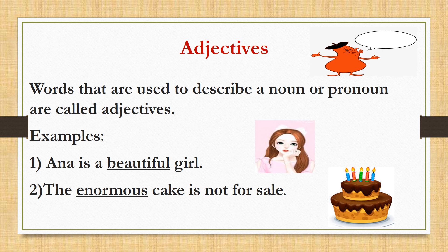So let's read the definition first. Words that are used to describe a noun or pronoun are called adjectives. We can also say that adjectives tell more about the kind, quality, quantity, etc. of the noun or pronoun.